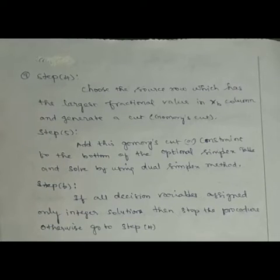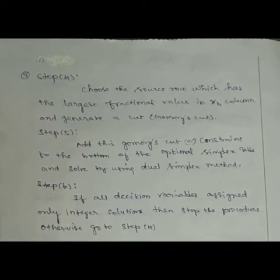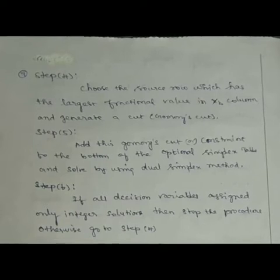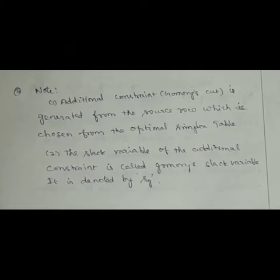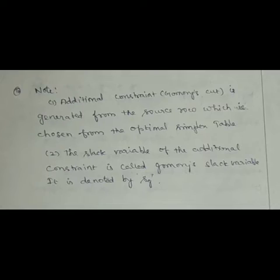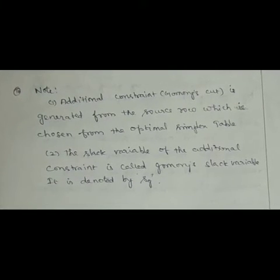Step 5: Add this Gomory's Cut or constraint to the bottom of the optimal simplex table and solve by using the dual simplex method. Step 6: If all decision variables are assigned only integer solutions, then stop the procedure. The additional constraint, namely Gomory's Cut or new constraint, is generated from the source row chosen from the optimal simplex table. The slack variable of the additional constraint is called Gomory's slack variable and it is denoted by SG.